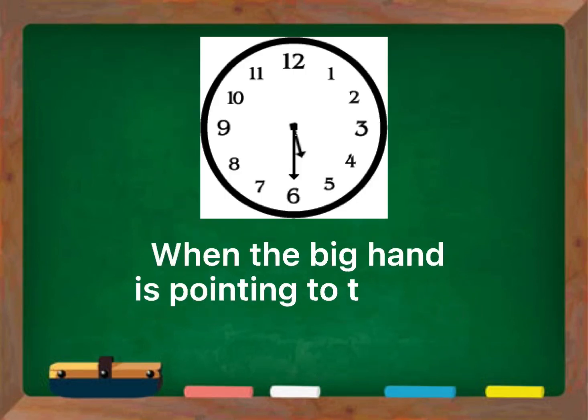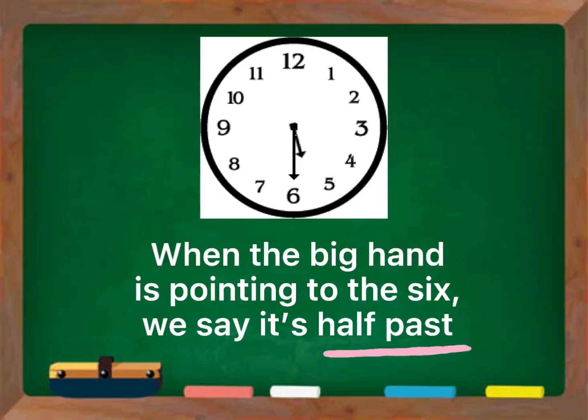When the big hand is pointing to the six, we say it's half past because half of the hour has passed. So now it's half past five.